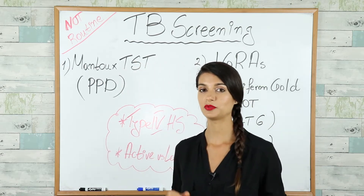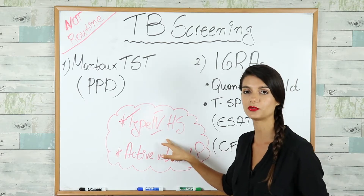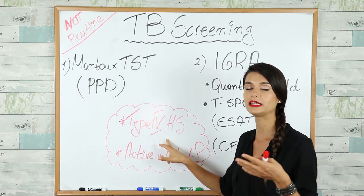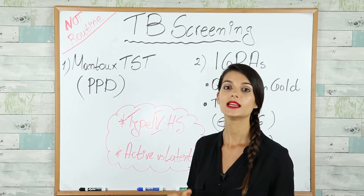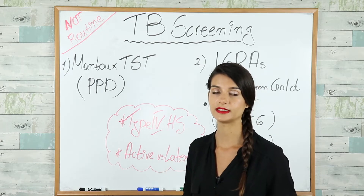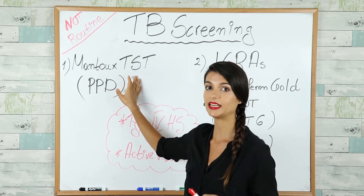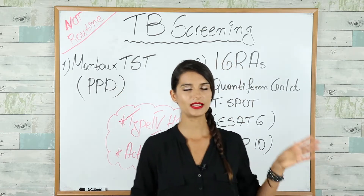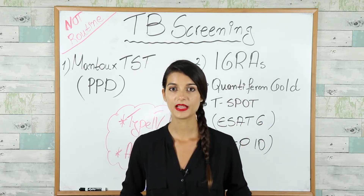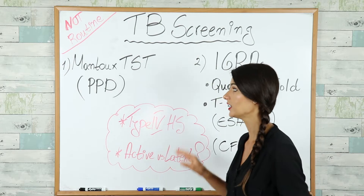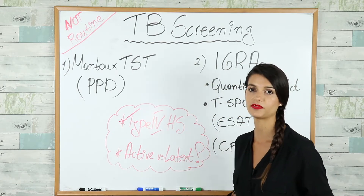Both these tests are looking for a Type 4 hypersensitivity reaction, also called delayed type hypersensitivity reaction, which is mediated by antigen-specific effector T cells. In the skin test it happens in vivo, whereas in the blood test it happens in vitro. Importantly, both tests cannot differentiate between active versus latent TB infection.